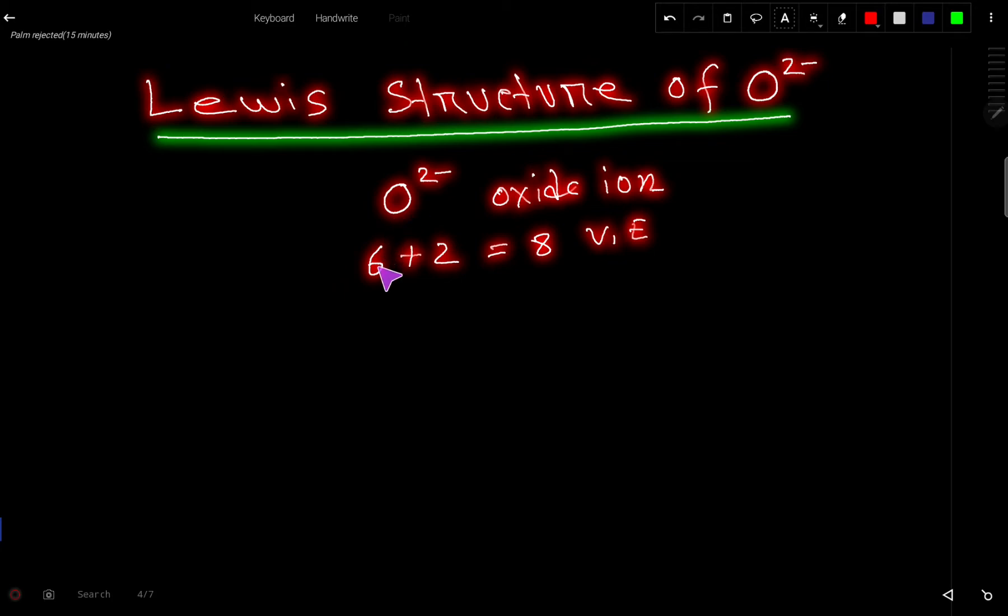Oxygen is an element of group 6A, that is why it has 6 valence electrons. For the negative charge, you have to add 2 because it has a 2- charge. So totally you have 8 valence electrons.